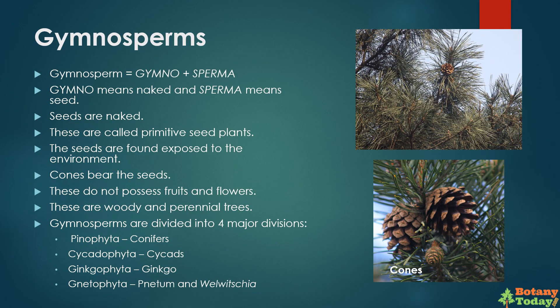What are gymnosperms? Gymnosperms are naked seed plants. The word gymnosperm is made from two Greek words: gymno, meaning naked, and sperma, meaning seed. These are called primitive seed plants. The seeds are found exposed to the environment; cones bear the seeds. These do not possess fruits and flowers. These are woody and perennial trees. Gymnosperm is further divided into four major divisions: Pinophyta, which includes conifers; Cycadophyta, which includes cycads; Ginkgophyta, which includes ginkgo; and Gnetophyta, which includes gnetum.